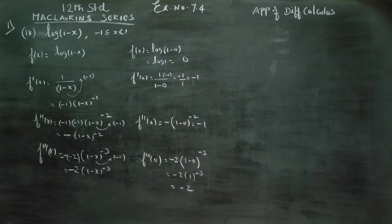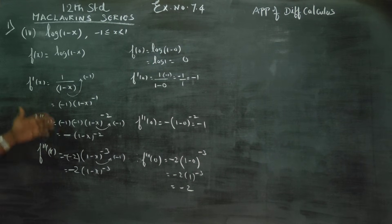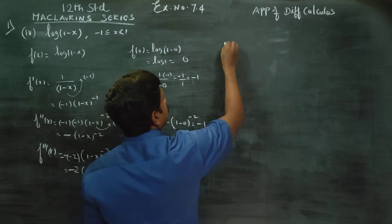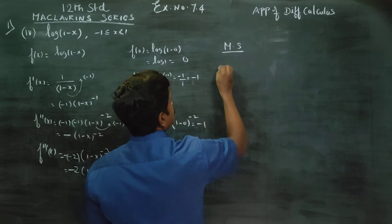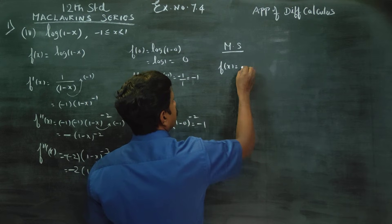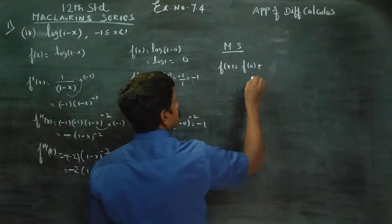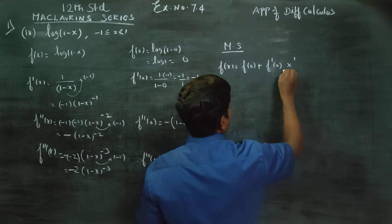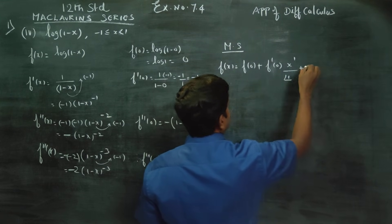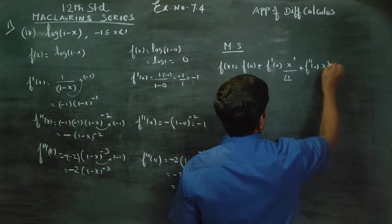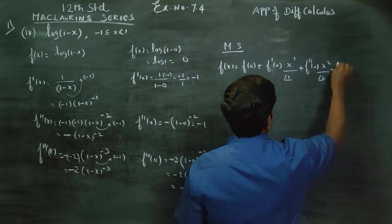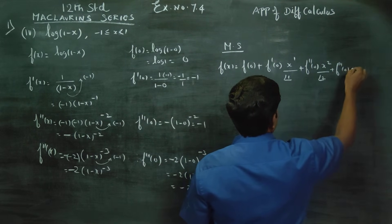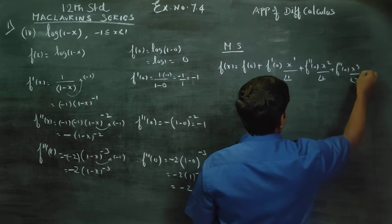Now simplify using the Maclaurin series. The Maclaurin series states: f(x) equals f(0) plus f'(0) times x to the power 1 by factorial 1, plus f''(0) times x squared by factorial 2, plus f'''(0) times x to the power 3 by factorial 3, and so on.